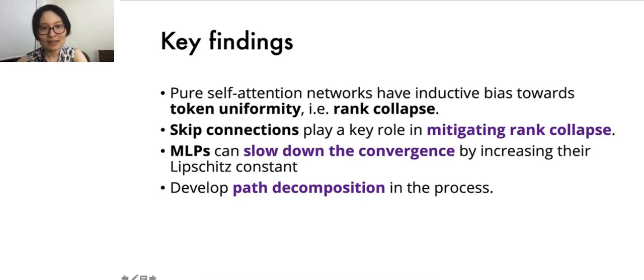Our analysis indicates that skip connections play a key role in mitigating this rank collapse, and MLPs can slow down this convergence by increasing their Lipschitz constant. Our results reveal a previously unknown vital utility of skip connections beyond facilitating optimization and gradient flow. We also develop a network decomposition in the process.